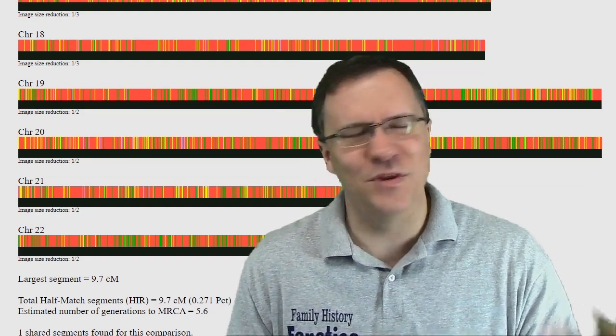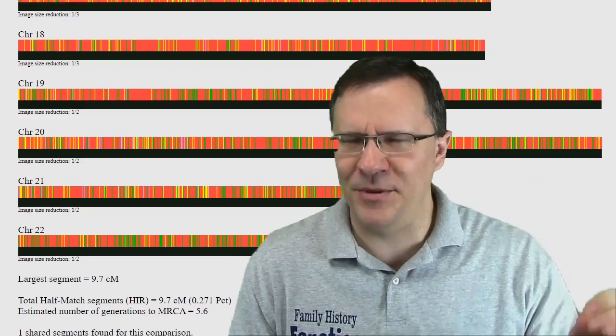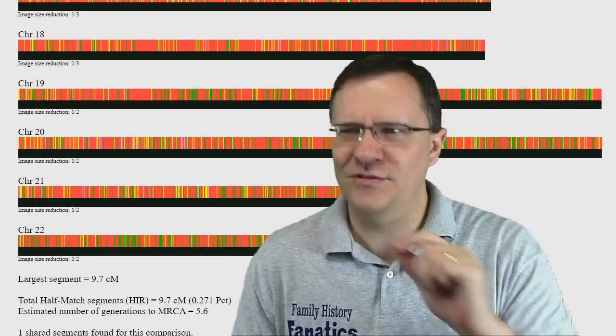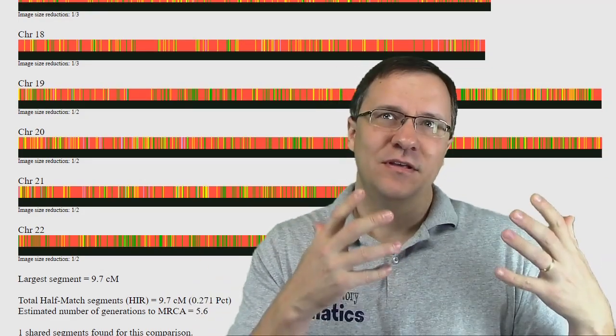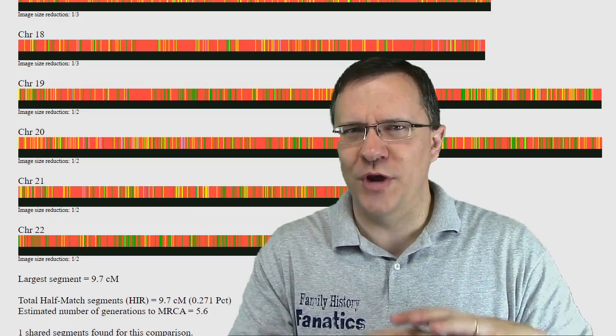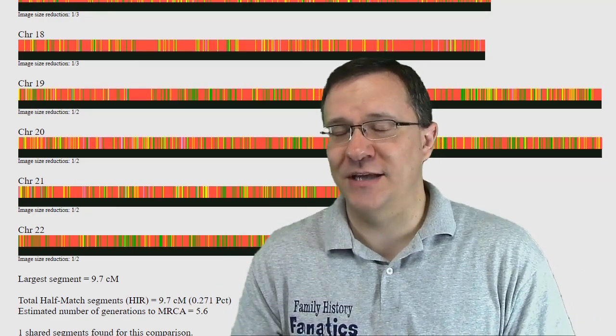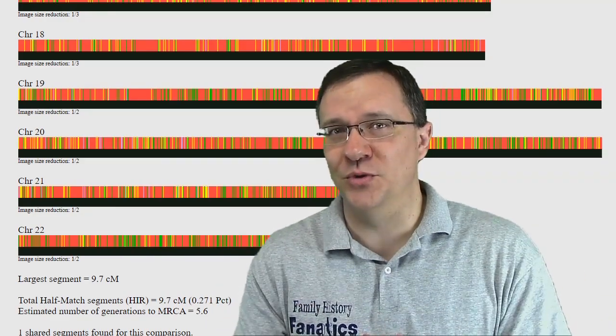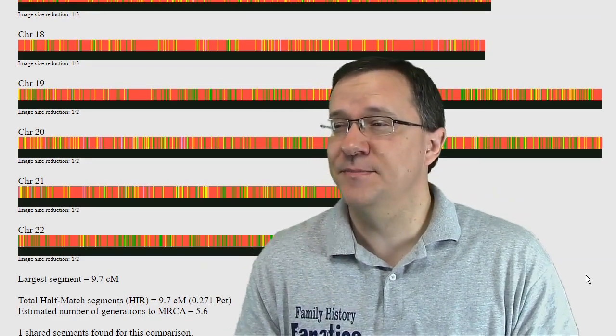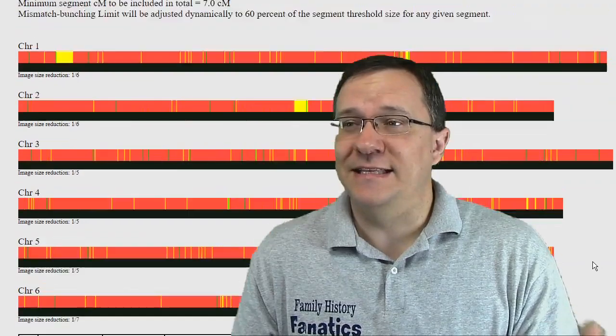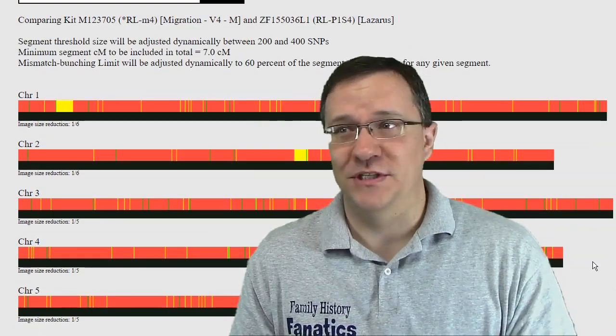So I created the kit again, doing the exact same thing, making sure that I copied the right numbers. No, this is what it is. Now while it gives enough SNPs to create a full Lazarus kit - you actually get 3,500 or so centimorgans over this, and that's creating it with four siblings - it didn't match the original person.